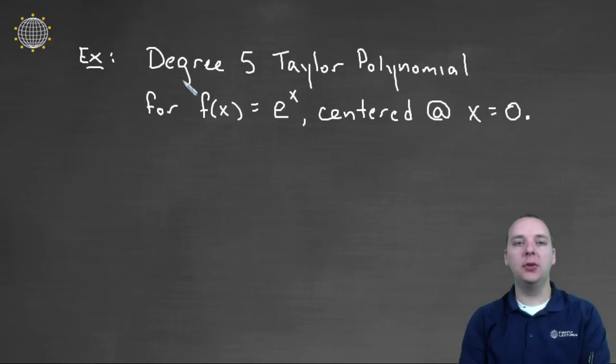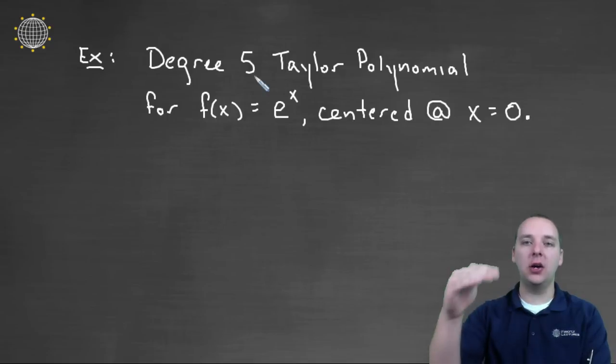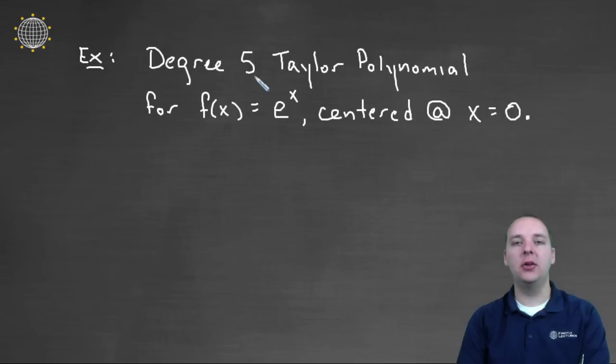Alright so here's what we're trying to do. We're trying to find a degree five polynomial, so that will be not a linear function, not a quadratic, not a cubic, not a degree four, but a degree five polynomial that bends and turns that will approximate e to the x, that exponential growth function.